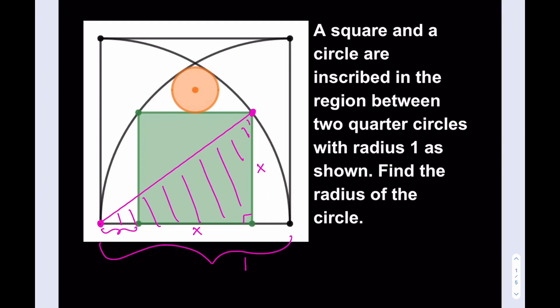Does that help us? Absolutely. We're going to be using symmetry here. If you call this piece a, this is also going to be a from symmetry. Now we can find a in terms of x. What am I supposed to do? I have a plus x plus a equals 1. And I'm trying to solve for a. So 2a equals 1 minus x, and therefore a equals (1 minus x) divided by 2.